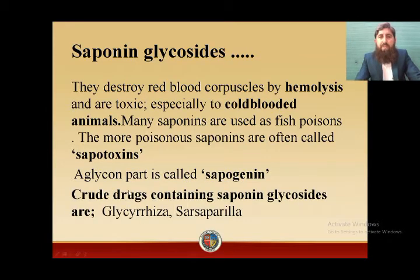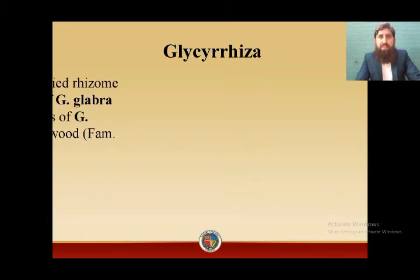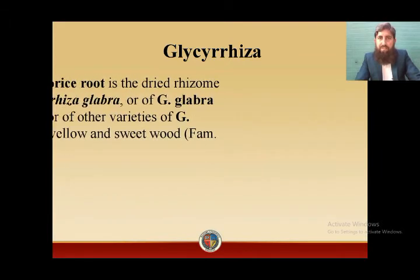Crude drugs containing saponin glycosides are glycyrrhiza and sarsaparilla. Now we will study them one by one — first glycyrrhiza, and then sarsaparilla — covering their pharmacognostic characteristics, chemical nature, and medicinal uses.